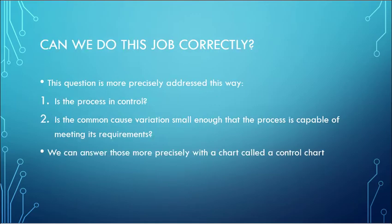So a couple of chapters ago, we talked about it's important to know, can we do this job correctly? We can answer this question much more precisely by asking two things. First, is the process in control? And second, is the variation that is the common cause variation, that variation that is inherent to the process, is it small enough that the process is capable of meeting its requirements?